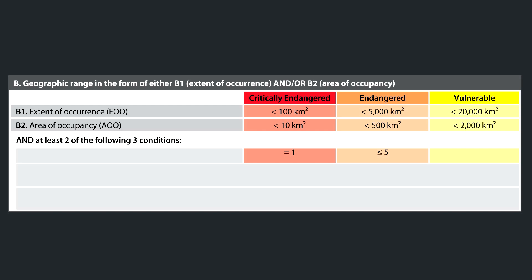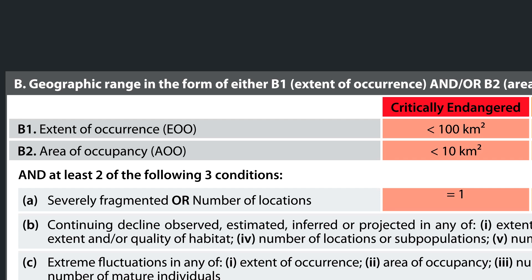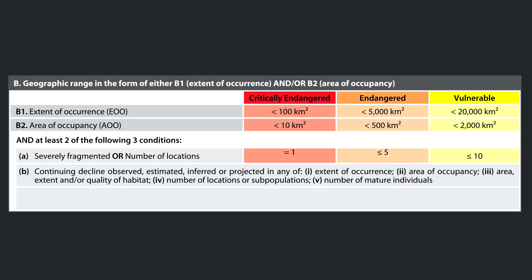If the extent of occurrence is under 100 square kilometers, then that species is critically endangered. If there's a natural disaster or the population fluctuates too low, that population can go into a tailspin from which it can never recover. So if a species existed in less than 100 square kilometers, and at least two of three conditions were true — severely fragmented or number of locations equals one; a continuing decline observed, estimated, inferred, or projected in extent of occurrence, area of occupancy, area/extent and/or quality of habitat, number of locations or subpopulations, or number of mature individuals — then this would trigger the listing.